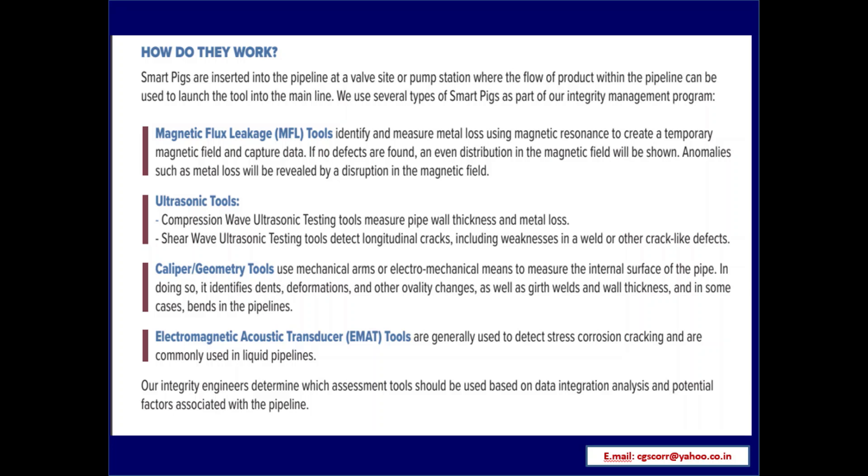Smart pigs are inserted into the pipeline at a valve site or pump station, where the flow of product within the pipeline launches the tool into the main line. Several types of smart pigs are used as part of the integrity management program. Magnetic flux leakage (MFL) tools identify and measure metal loss using magnetic resonance to create a temporary magnetic field and capture data. If no defects are found, an even distribution in the magnetic field is shown; anomalies such as metal loss are revealed by a disruption in the magnetic field.